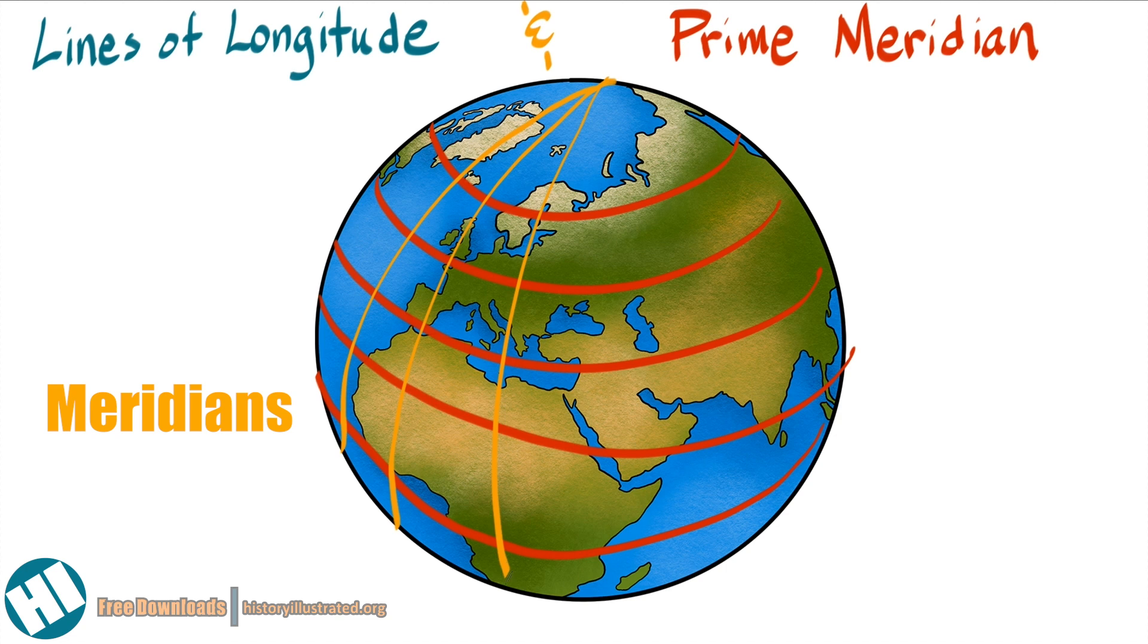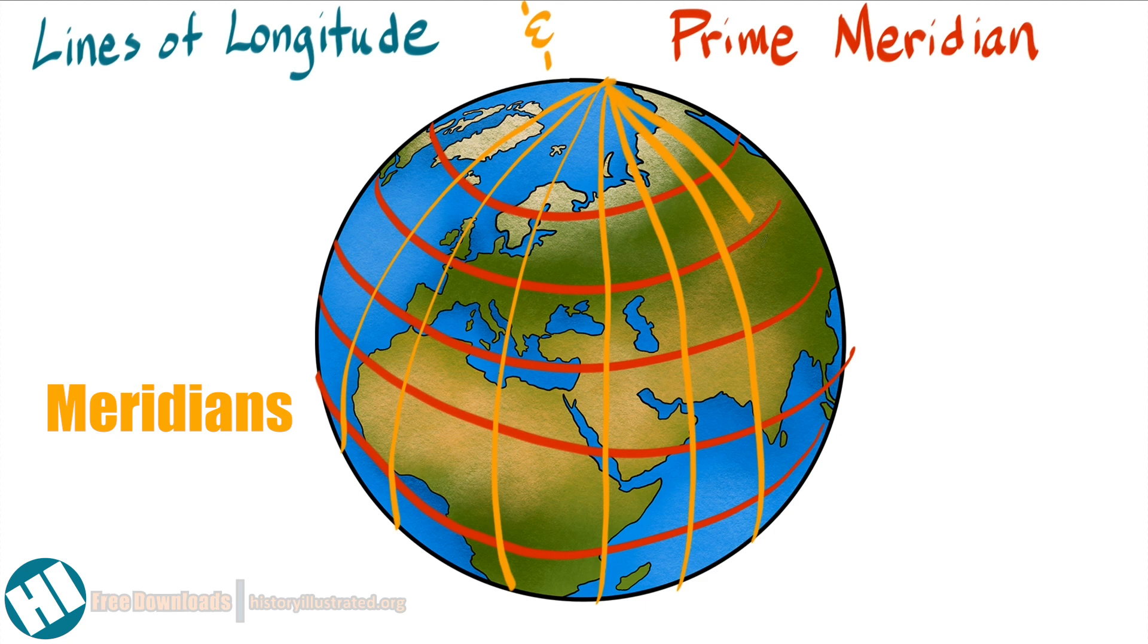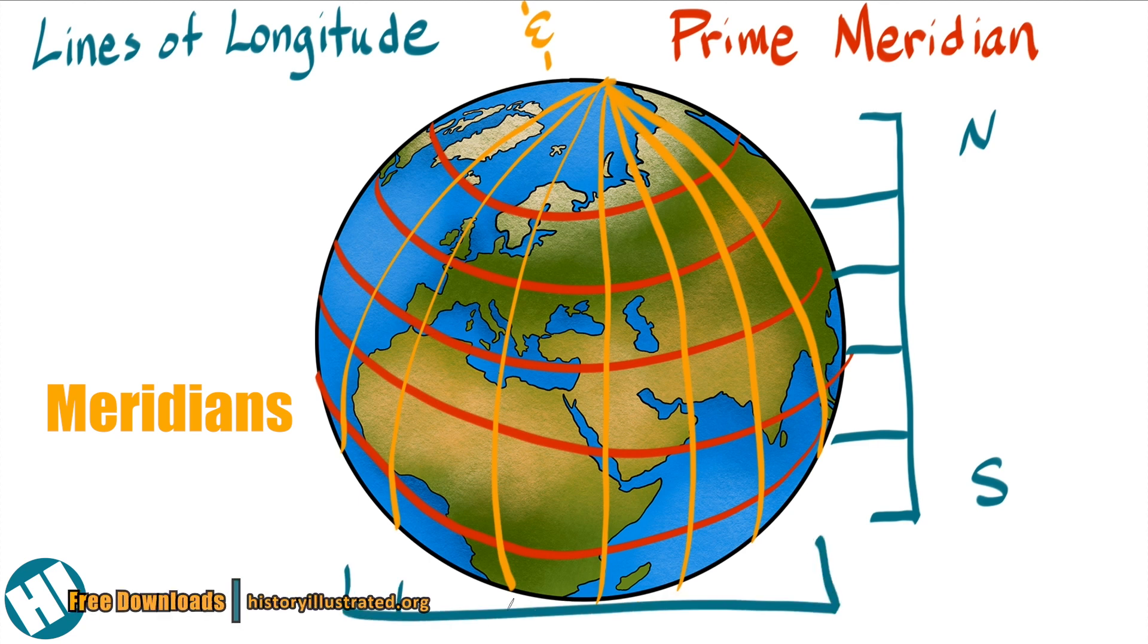Just like parallels, meridians run in circles around the earth, but instead of running around the earth sideways, they run up and down. Parallels measure how far north or south you are from the equator, but meridians measure how far east or west you are.